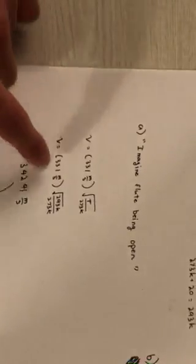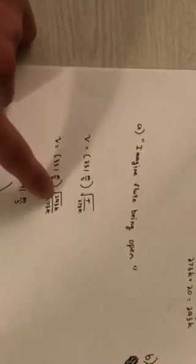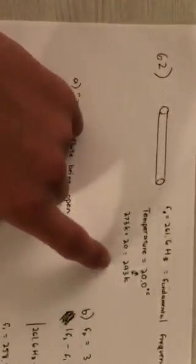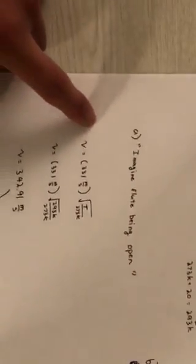So we first have to plug in the 293 kelvin which we get from the temperature above and then we get an answer of the velocity being 342.91 meters per second.